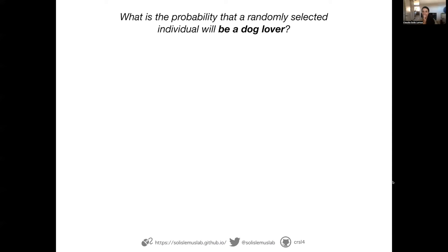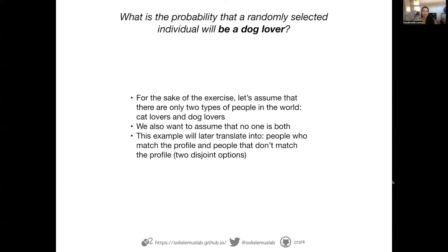Let's make this question easier. Instead of calculating probabilities of DNA matches, let's say I want the probability that a randomly selected person will be a dog lover. We're going to assume there are only two types of people — cat lovers and dog lovers — and no one is both. We're making these assumptions because we want to translate these questions to our forensic probability, where there will be two groups: people that match the profile and people that do not. These are two distinct, non-intersecting groups.